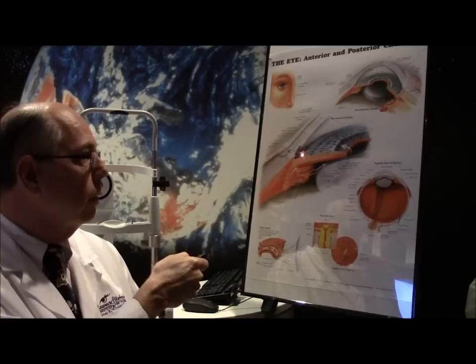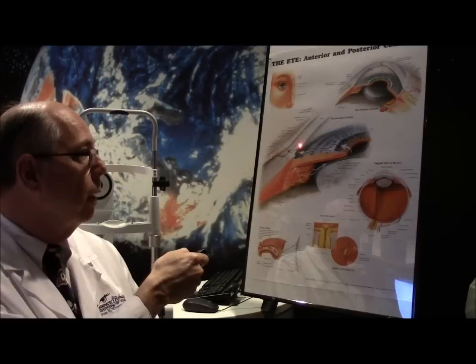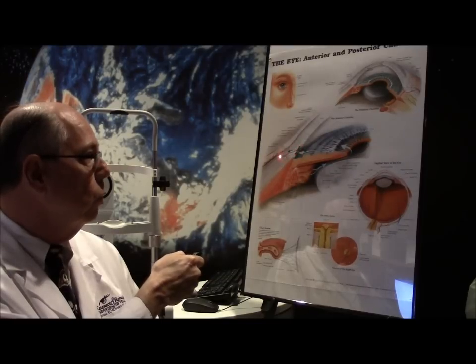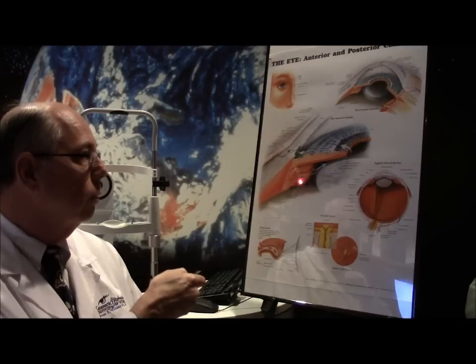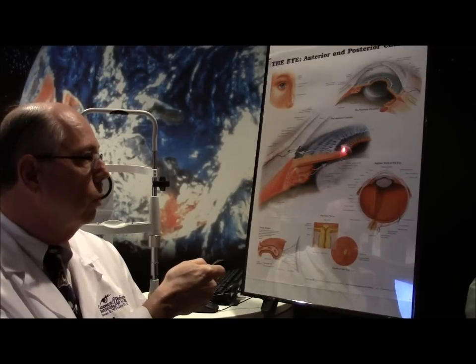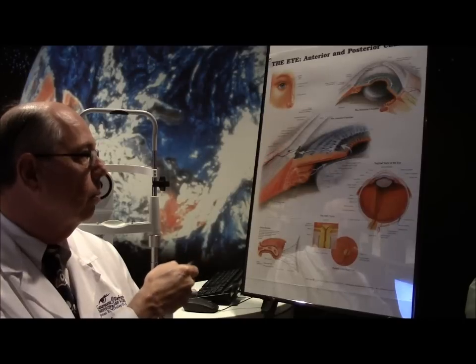And then goes through this trabecular meshwork. This is sort of like cheesecloth that the fluid filters through into Schlemm's canal. And then from that canal it drains into a vein into your blood system. So there's a constant production of fluid in your eye, goes through the pupil.